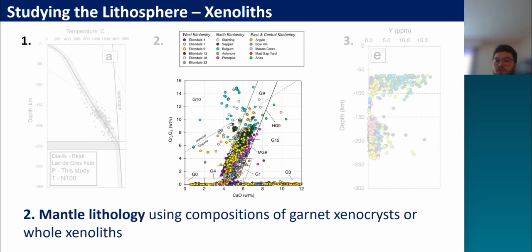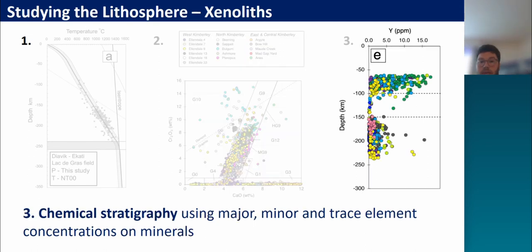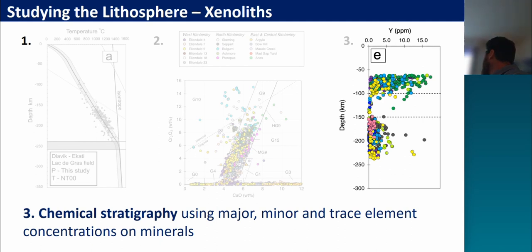Second, we can use the composition of various minerals or whole rocks to reconstruct the lithology. Garnet in particular records its host composition quite reliably, so we can calculate the pressure and temperature of garnet or the whole rock and essentially reconstruct how the lithology of the mantle changes as a function of depth - quite important when comparing with geophysical datasets to work out the cause of conductors or anomalous seismic velocities. Finally, we can reconstruct the geochemical stratigraphy of the mantle using the pressure and temperature of individual minerals or whole rocks, plotting composition as a function of depth. This can tell us for elements like nickel and cobalt where certain reservoirs are hosting metal accumulations in the mantle.